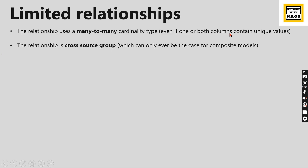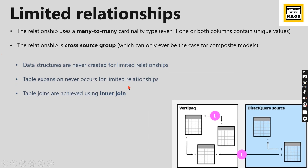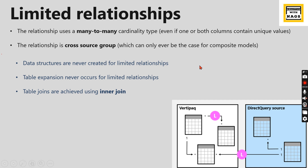A limited relationship occurs when a relationship uses many-to-many cardinality, or the relationship is cross source group — one table in import and another in DirectQuery. The implications are: data structures are never created for limited relationships, table expansion never occurs, and table joins are achieved using inner join semantics — whereas one-to-many uses left outer join semantics.